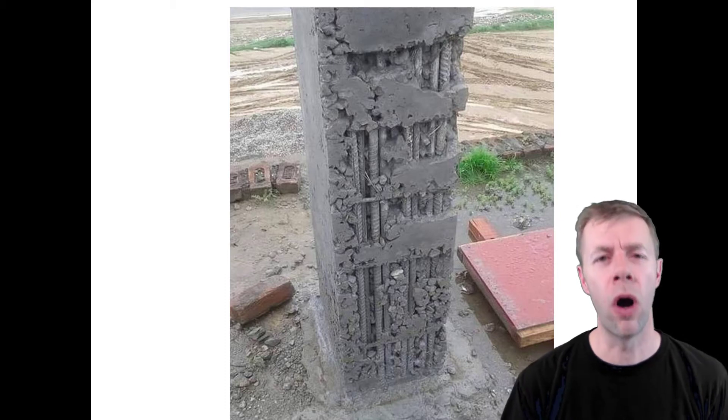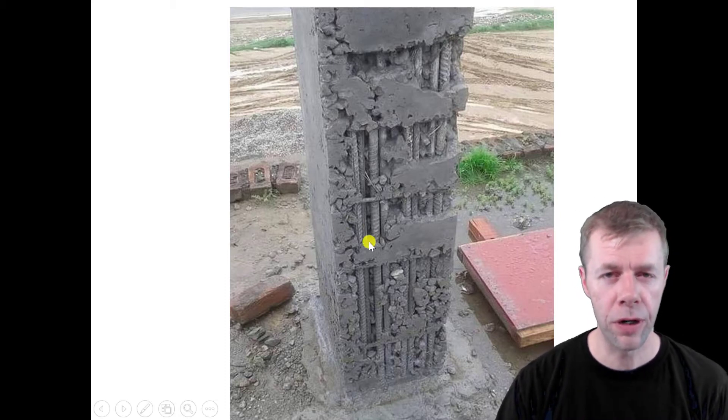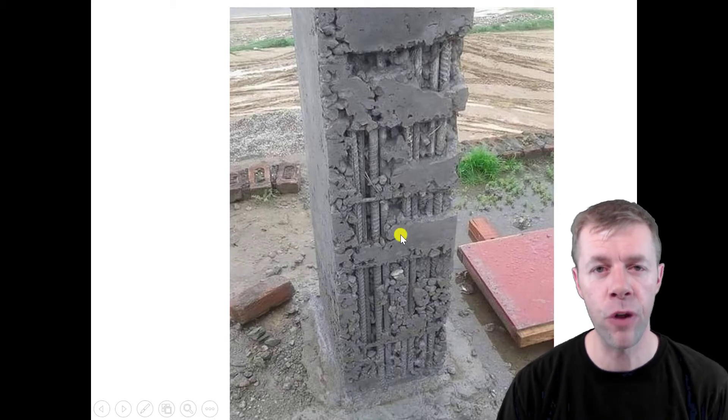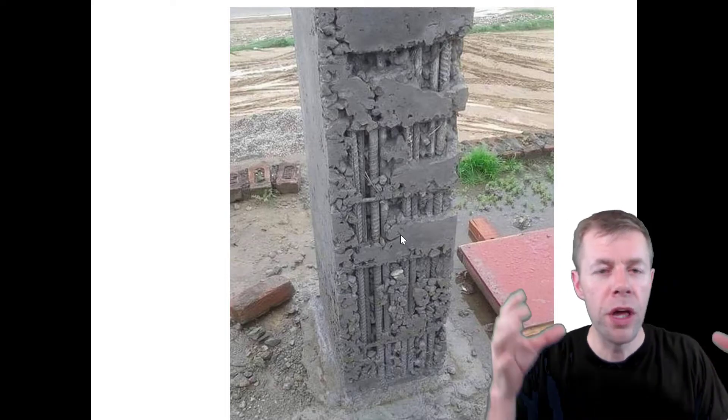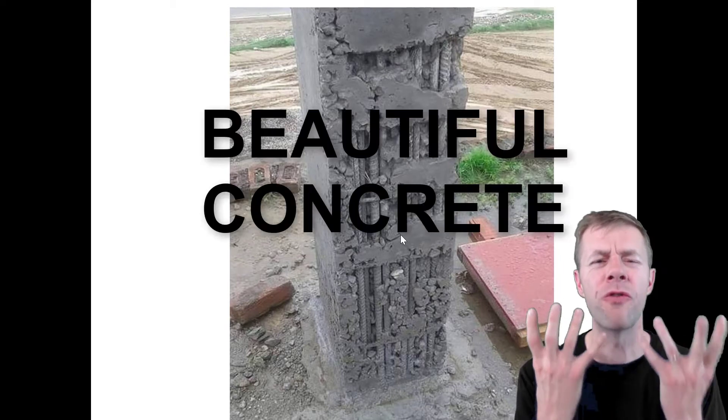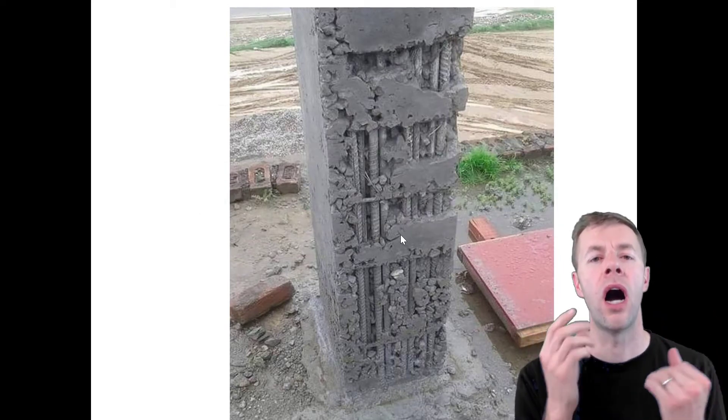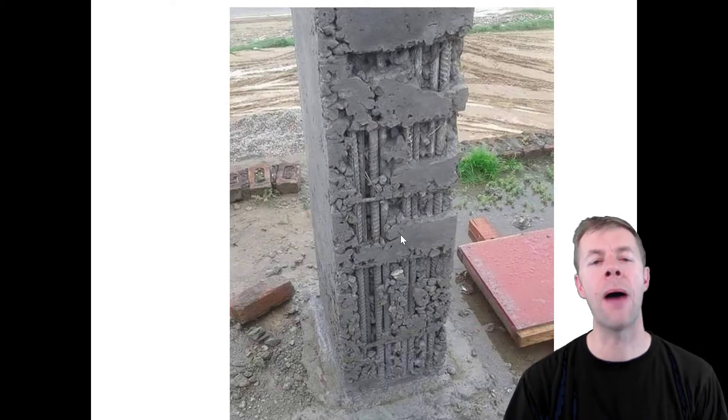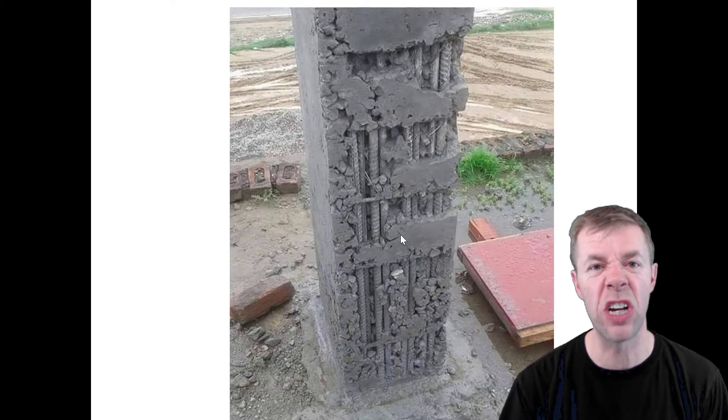Your bar spacing was wrong. Your bars were too close together and your concrete couldn't flow between them. You were almost there. You designed a column that was beautiful, you put forms around it, you put reinforcing in it, you poured beautiful concrete in it and this is what happened. I want to make sure this never happens to you. I want to make sure you always get your bar spacing correct so this doesn't happen.